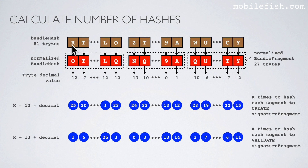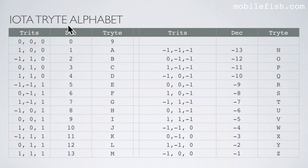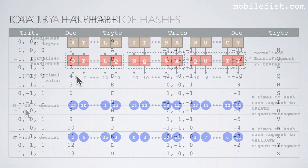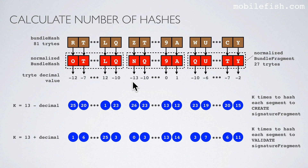The normalized bundle hash is calculated as I explained in IOTA tutorial 16. These are all trit values and these are the decimal representations of these trit values. You can use the IOTA trit alphabet to find the corresponding decimal value for each trit. Apply for each decimal value the following calculation: k = 13 minus the decimal value. For example, 13 minus (-12) is 25, 13 minus (-7) is 20, 13 minus 12 is 1, etc. These values are the number of times to hash each segment to create the signature fragment.